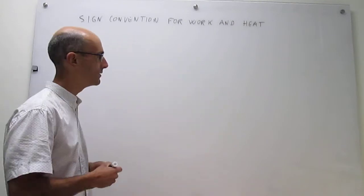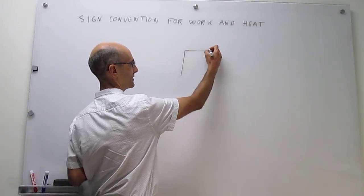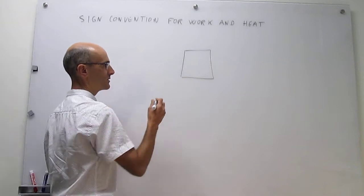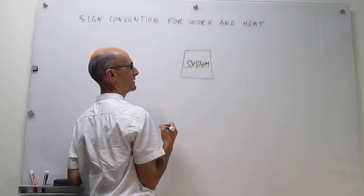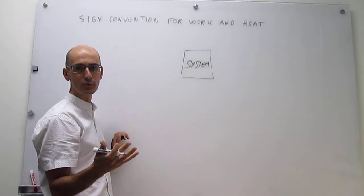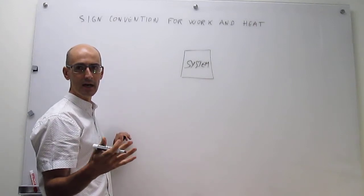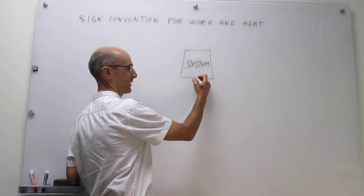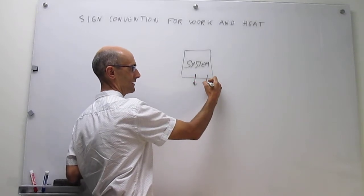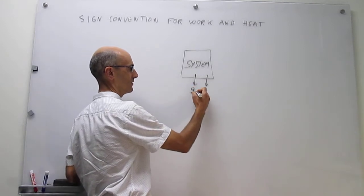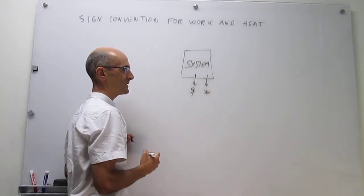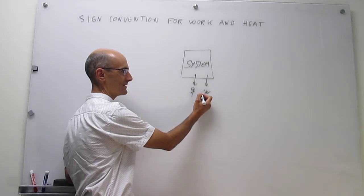Let's try to write that down and then see a couple of examples. Suppose that this is your system, and there's a couple of things that can happen. You can transfer energy out of the system as work and heat. If the energy is lost by the system, you have here work and heat transfer out of the systems, then these ones will be negative.